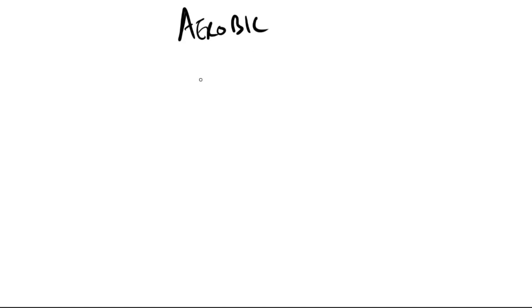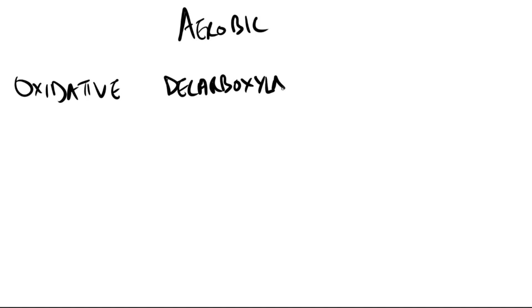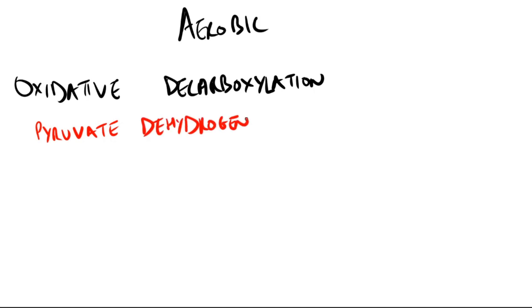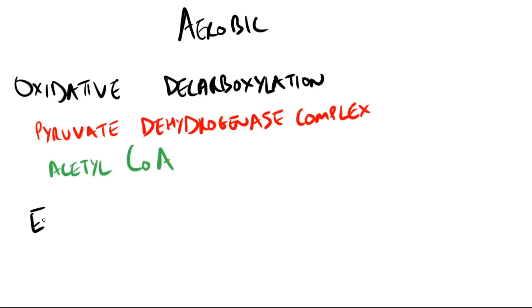Aerobic glycolysis is called aerobic because oxygen is required to re-oxidize the NADH formed during the oxidation of glyceraldehyde 3-phosphate in the chain reaction. Oxidative decarboxylation of pyruvate by the pyruvate dehydrogenase complex — which I'll cover in my next video — irreversibly converts it to acetyl coenzyme A, the major fuel for the citric acid cycle. This is why aerobic glycolysis is important: pyruvate undergoes oxidative decarboxylation to yield acetyl CoA, which is what we need from glucose.